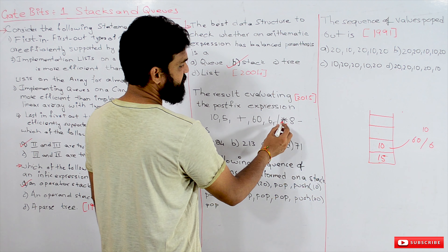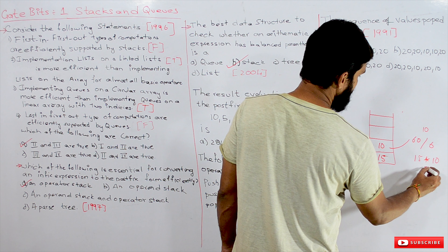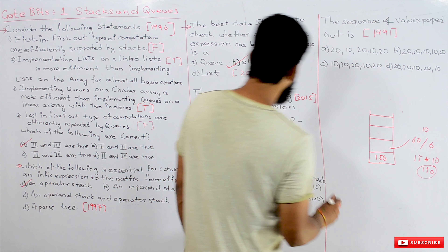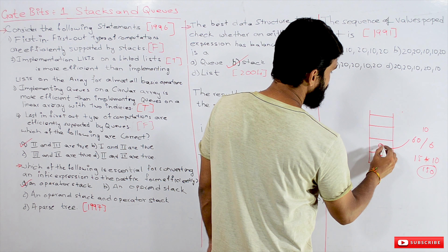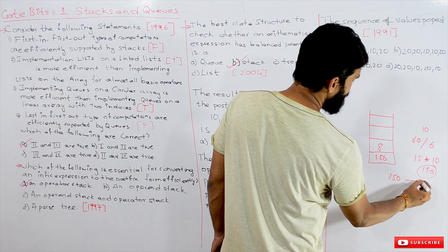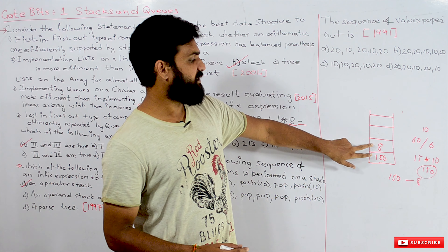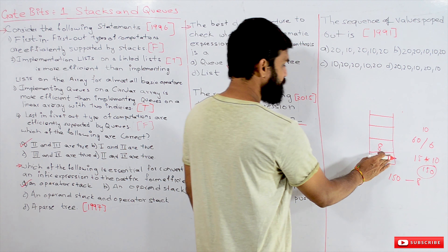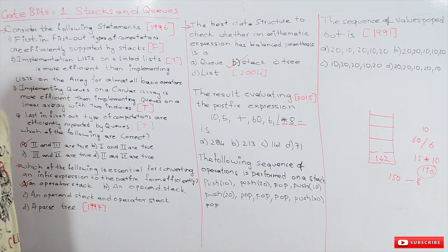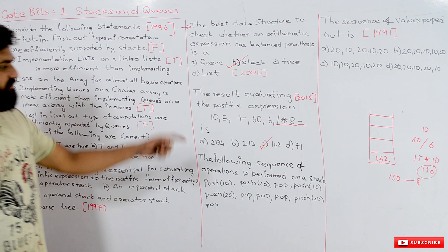Next a multiplication operator is found, so two elements are popped — giving 150, which is pushed back. Then another operand is pushed, and a final operator pops two elements, performs the operation, and pushes the result. At the end of the expression, whatever remains in the stack is the final output. The answer to this postfix evaluation is 142.